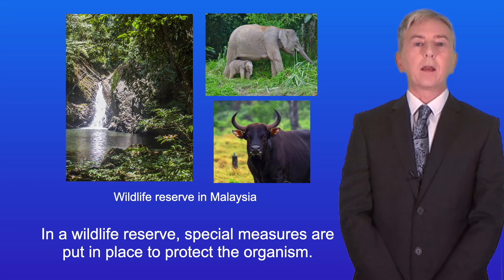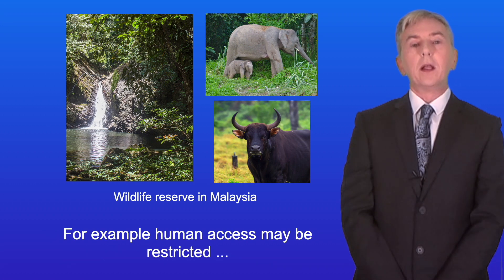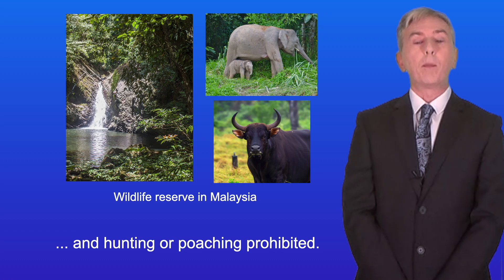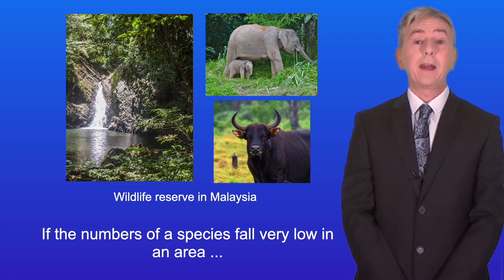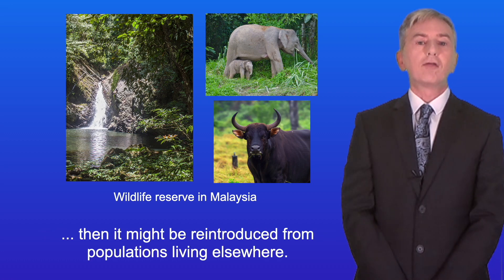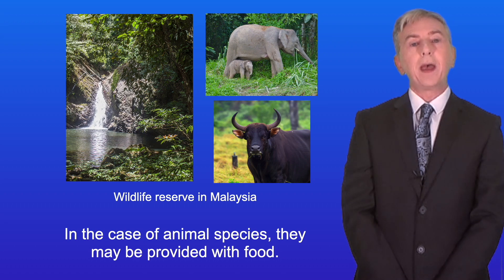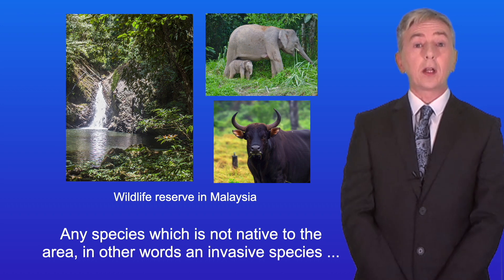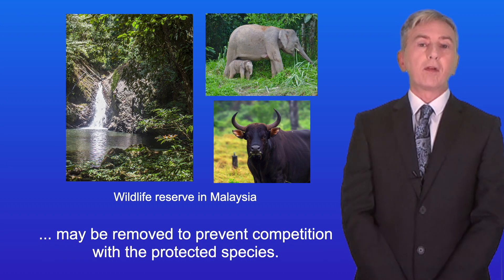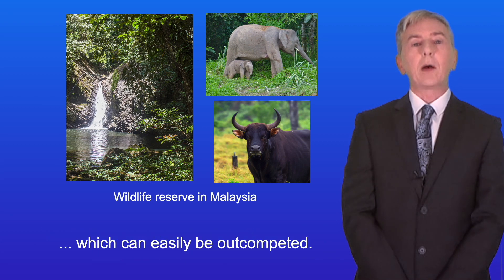In a wildlife reserve, special measures are put in place to protect the organism. For example, human access may be restricted and hunting or poaching prohibited. If the numbers of a species fall very low in an area, then it might be reintroduced from populations living elsewhere, and in the case of animal species they may be provided with food. Any invasive species may be removed to prevent competition with the protected species, which is especially important for protected plants that can easily be out-competed.